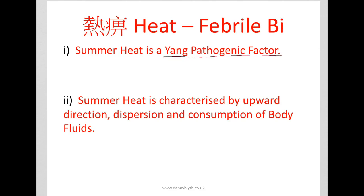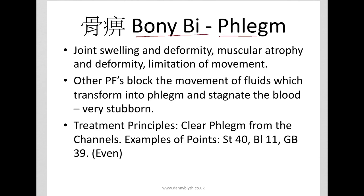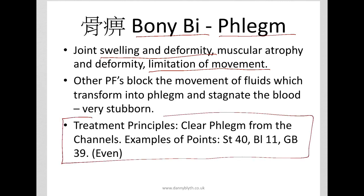Summer heat is a yang pathogenic factor so we get acute and sudden pain and joints that are red, hot, painful, and swollen. This is something that should be referred to medics before you treat it, as with any unexplained sudden pains. It is characterised by an upward direction, dispersion, and consumption of body fluids. We also talk about bony Bi syndrome caused by phlegm — this is swelling or deformity of the joints which can limit movement: bony growths, lumps, and bumps. Again these should be diagnosed by a medic first, but if you see them complicating things like osteoarthritis or rheumatoid arthritis then you can use points to clear phlegm as well.